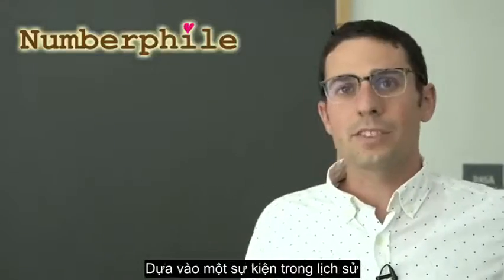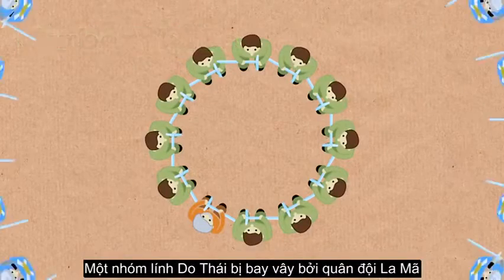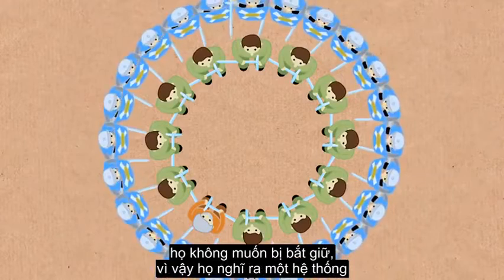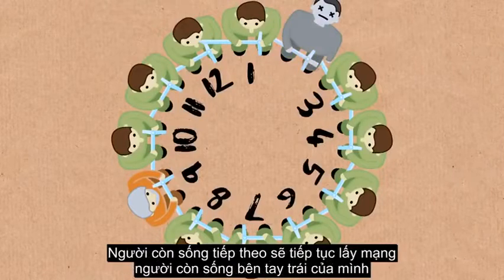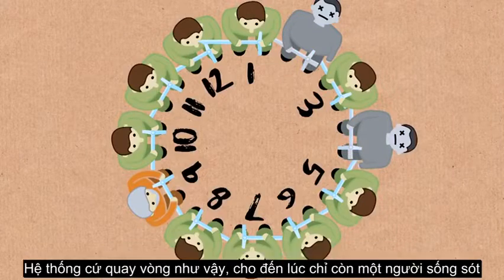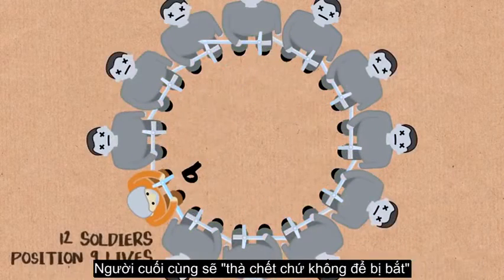So it's called the Josephus Problem. It's based on something from history. There was a group of Jewish soldiers who were surrounded by the Roman army and they didn't want to get captured.